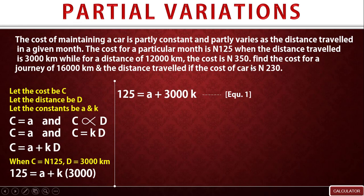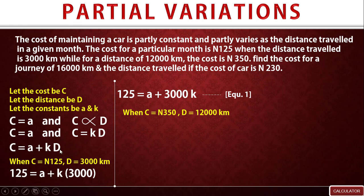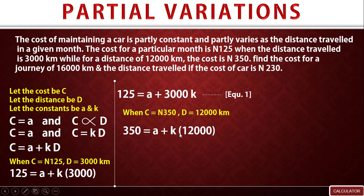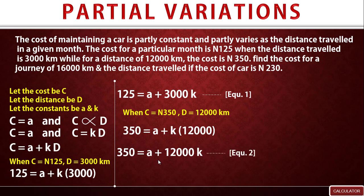For a distance of 12,000 kilometers the cost is 350 naira. So D equals 12,000 and C equals 350. Substituting into C equals A plus kD gives: 350 equals A plus k times 12,000, which simplifies to 350 equals A plus 12,000k. We call this equation two. We now have two equations, equation one and equation two, and we need to solve them simultaneously to find A and k.